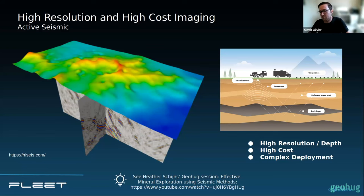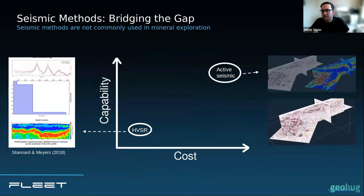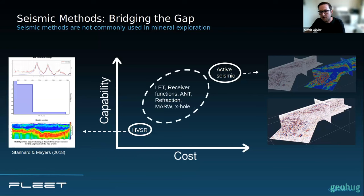So if we think about seismic methods in terms of cost versus capability, we've got HVSR, which is relatively low cost and low capability, and on the other end, active seismic — very capable but extremely expensive. In academia, there are methods that bridge these two: local earthquake tomography, receiver functions, ambient noise tomography, refraction and diffraction studies, MASW, and cross-hole tomography. But by far the most popular method nowadays is ambient noise tomography — open any academic journal and you'll see lots of examples.